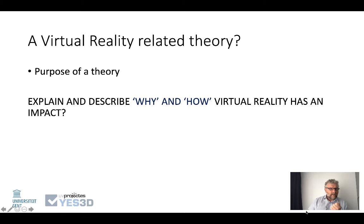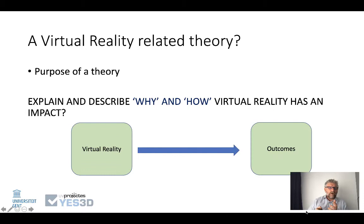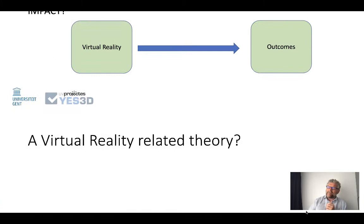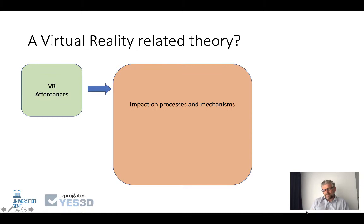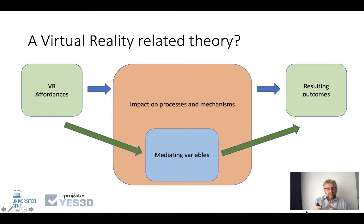So we really need to rethink what a theory is. When we have a good, effective theory, it helps us to explain and describe why and how virtual reality has an impact — how it works. We have to look at virtual reality and the outcomes, but it's more complex than this. We look at its design and the specific choice of affordances, and how these affordances invoke processes and mechanisms that can explain certain outcomes. And you might only get outcomes if you also cater for what we call mediating variables.